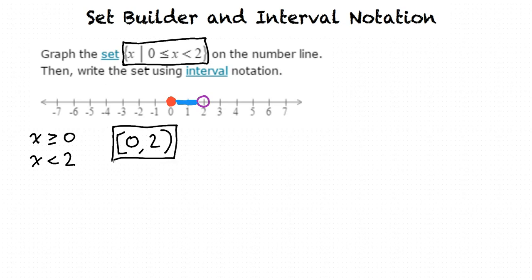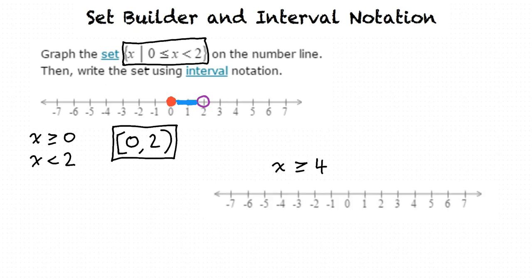Now we want to introduce inequality graphs that do not have bounds to them. For example, if we have x is greater than or equal to 4, then we plot x equals 4 with a closed circle to show inclusion, and we draw an arrow to the right of that, representing all values greater than 4. There is no bound here, so the values of x go on toward positive infinity.